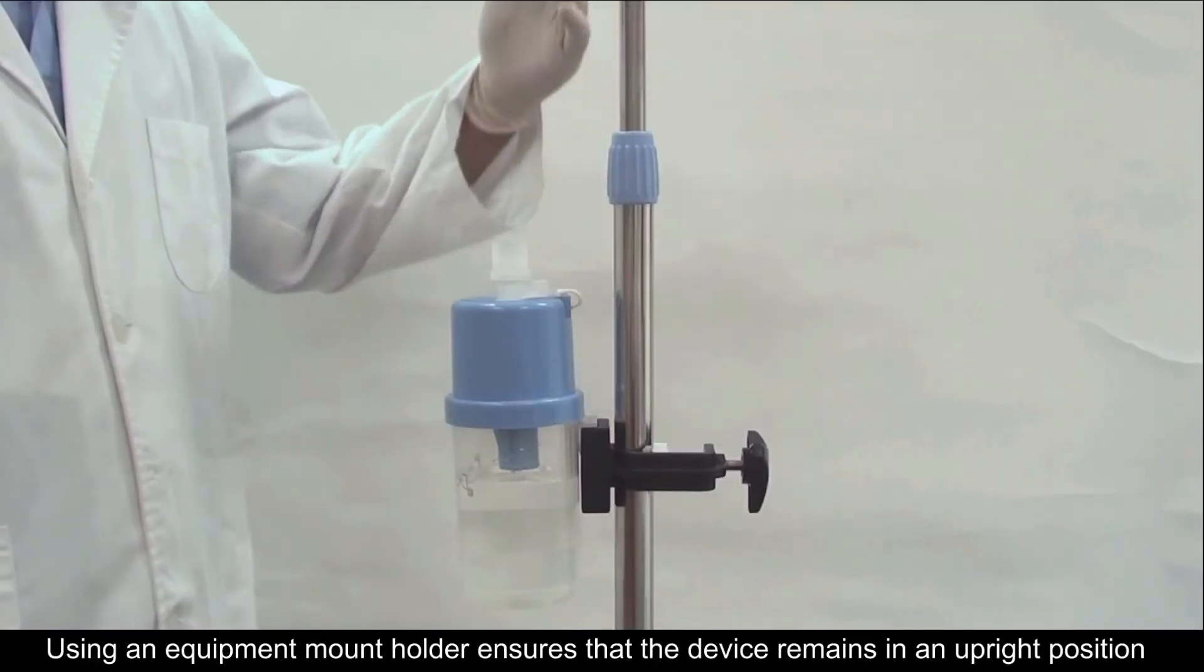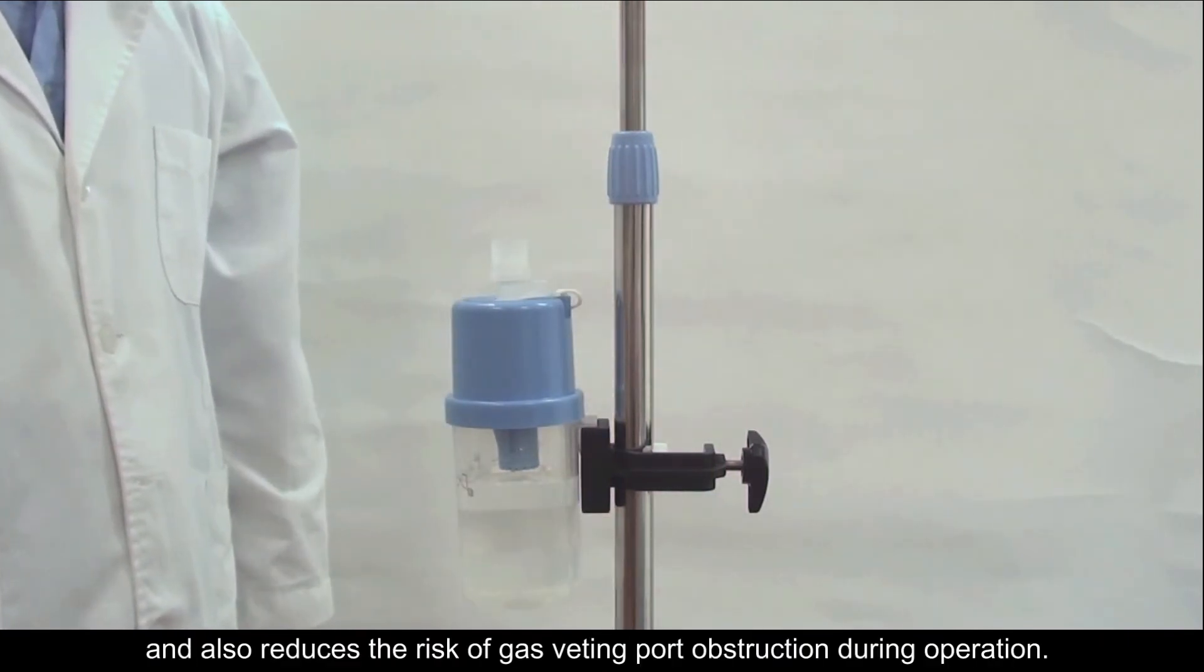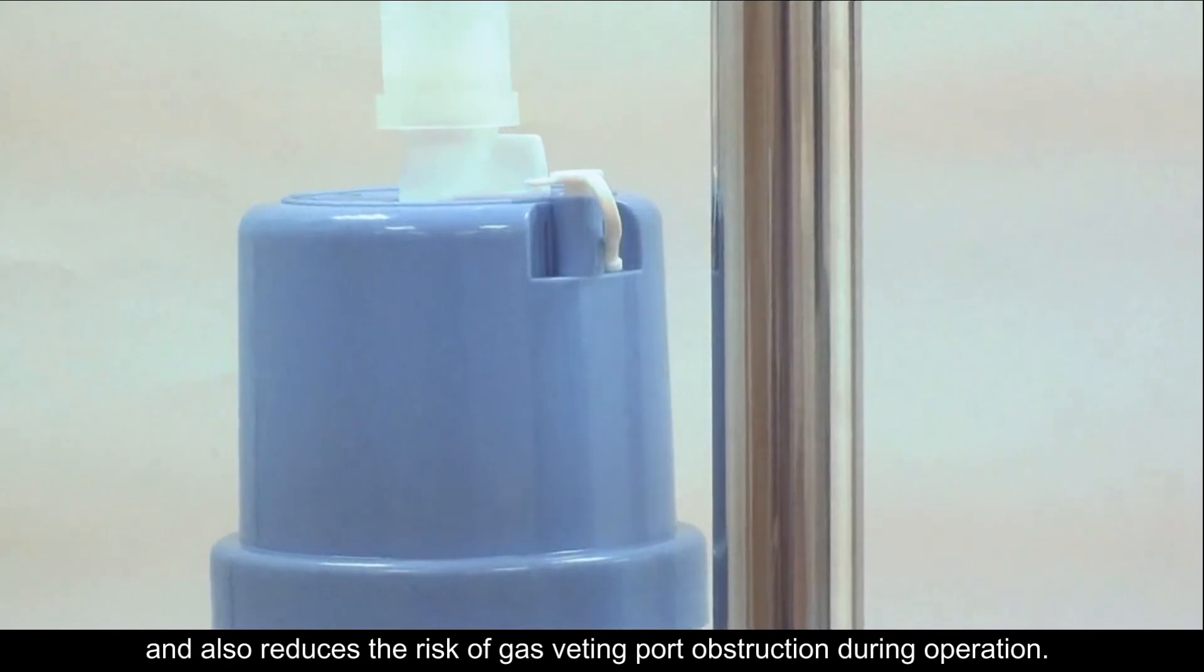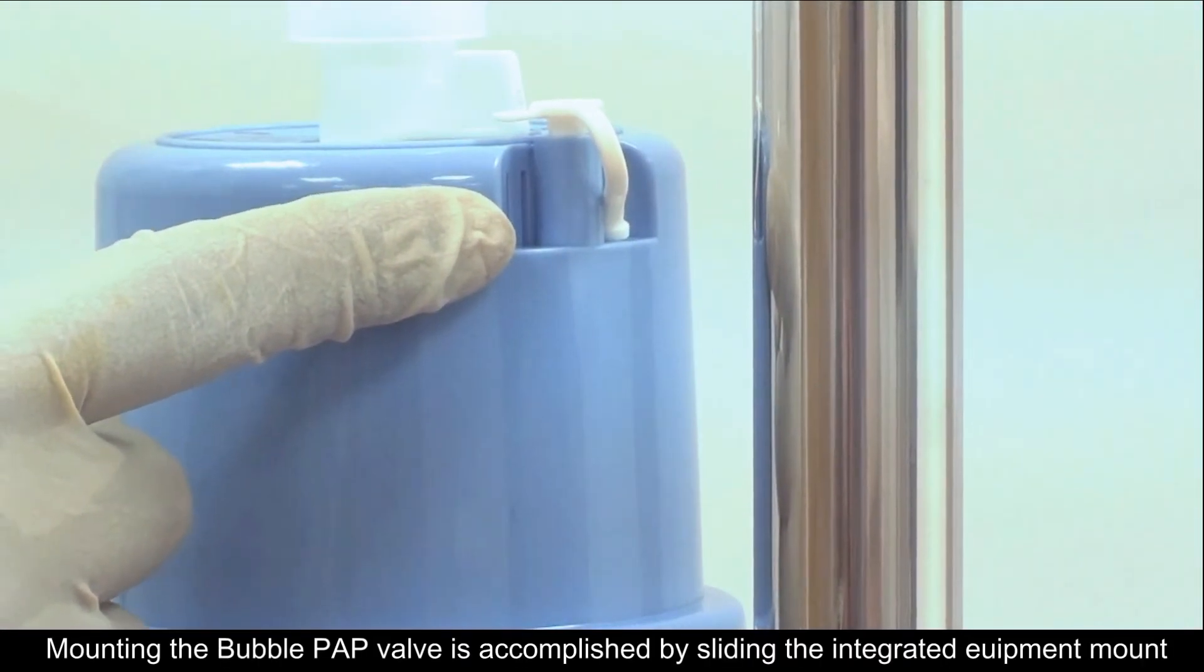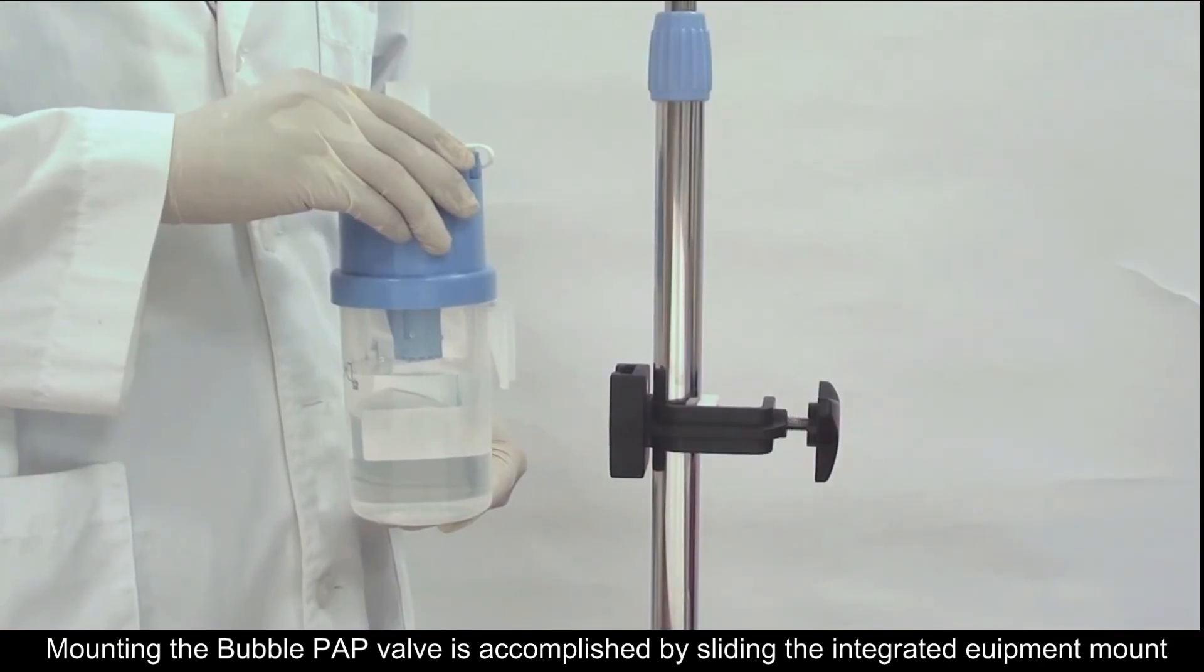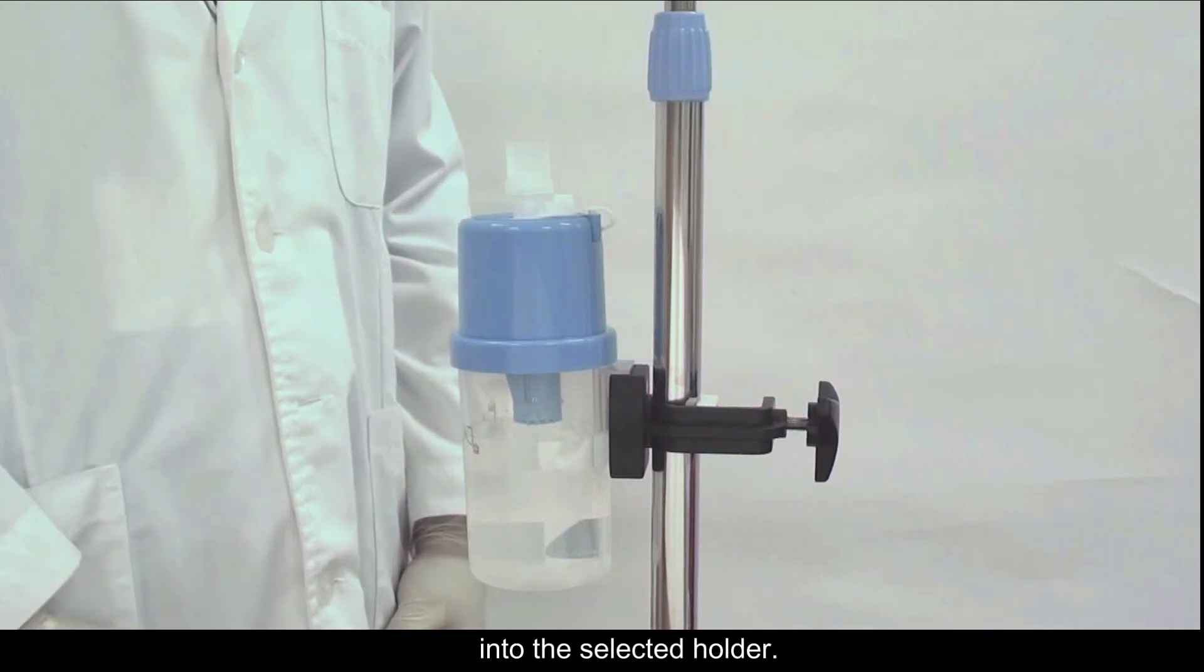Using an equipment mount holder assures that the device will remain in an upright position and also reduces the risk of gas venting port obstruction during operation. Mounting the bubble PEP valve is accomplished by sliding the integrated equipment mount into the selected holder.